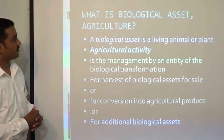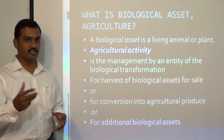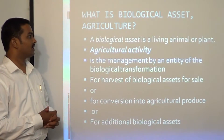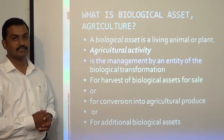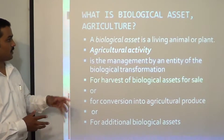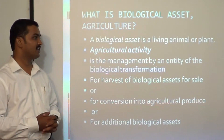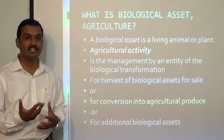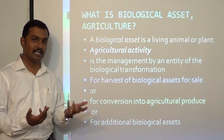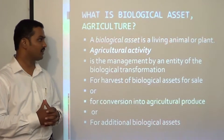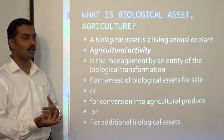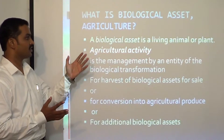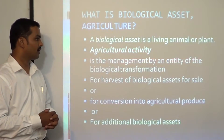First we need to understand a few terms before going into the standard. What is a biological asset? As per the standard, a biological asset is a living animal or a plant. In agriculture we are normally dealing with animals or plants, so any living animal or plant managed in an agricultural activity is considered a biological asset.